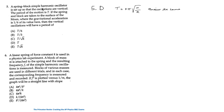For question 5: a spring-block simple harmonic oscillator is set up so that the oscillations are vertical, with period T. If the spring and block are taken to the surface of the moon, where gravitational acceleration is one-sixth its value on Earth, the vertical oscillations will have a period of... The answer is D — it remains the same, because the period of a block-spring system equals 2π√(M/K), which does not depend on gravity. Gravity will shift the equilibrium position, but will not affect the frequency or period of oscillation.